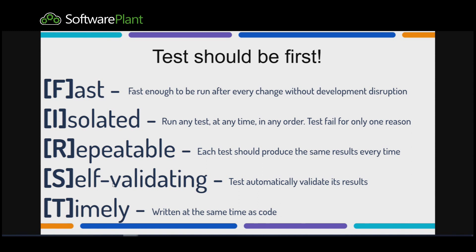F stands for Fast, and it's really simple: I should be able to run my tests every time I want. I shouldn't wait — they shouldn't disrupt my development process. I can just make one simple change, run the test, and see the result.